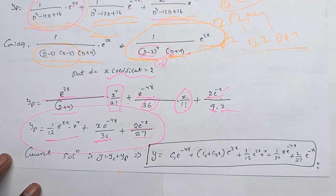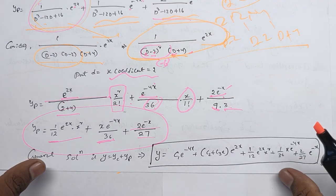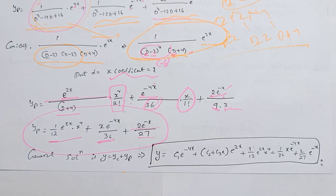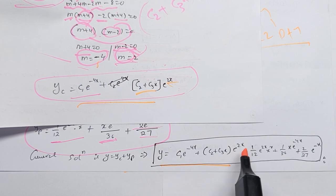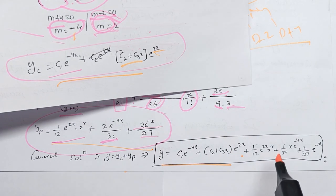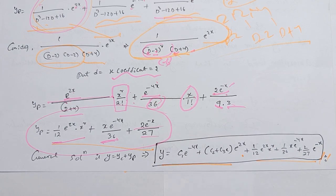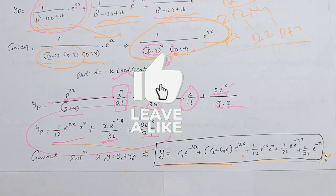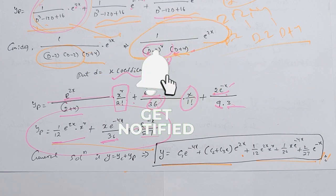The yp value and general solution: the general solution y is equal to yc plus yp. You can share the code and subscribe, and make sure you comment on the video. Thank you.